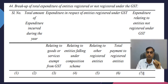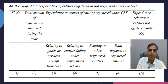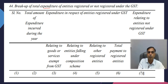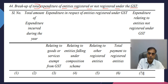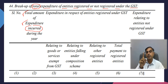Now let me discuss how the Clause 44 format is structured and how to fill it up. As I mentioned, the title is 'breakup of total expenditure of entities registered or not registered under GST.' The breakup of total expenditure is to be given for the entity which is liable to get Tax Audited, and the bifurcation covers the total amount of expenditure incurred during the year.